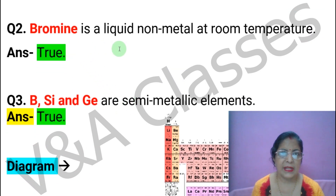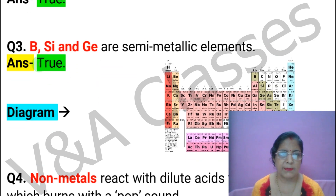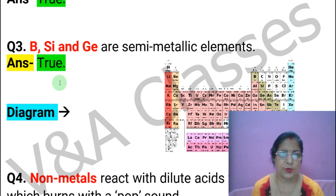Bromine is a liquid non-metal at room temperature. This statement is TRUE. Next statement: Boron, silicon, and germanium are semi-metallic elements. This statement is TRUE.